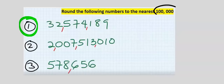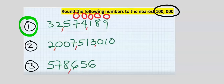To the nearest hundred thousand, the place value is zero zero zero zero zero. This hundred thousand place falls on five. The digits three and two will remain unchanged.